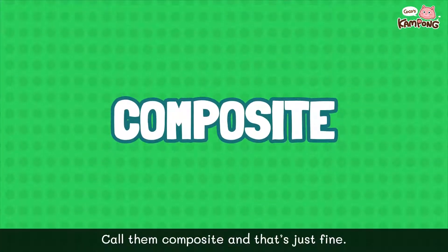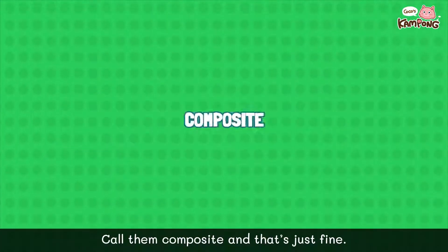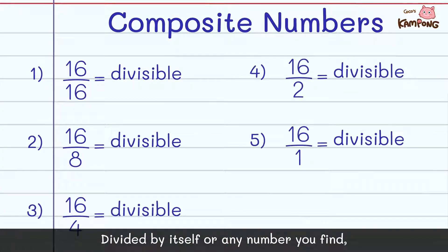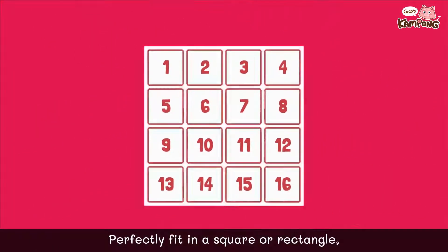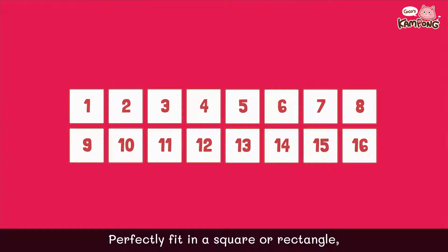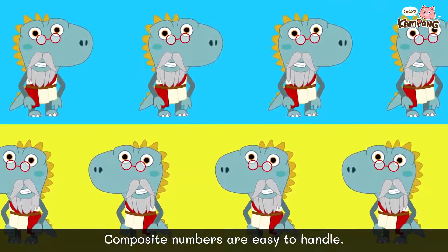call them composite and that's just fine. Divided by itself or any number you find, there can be two or more ways, keep that in mind. Perfectly fit in a square or rectangle, composite numbers are easy to handle.